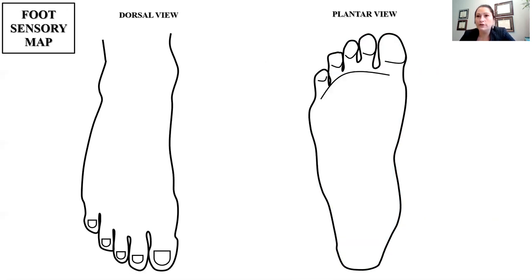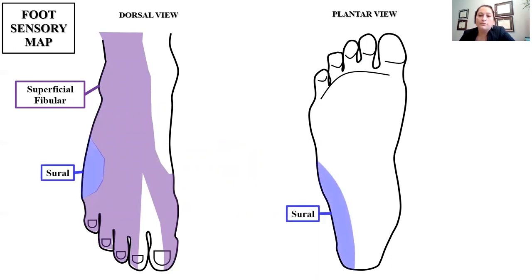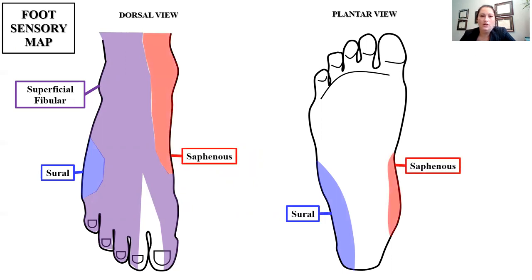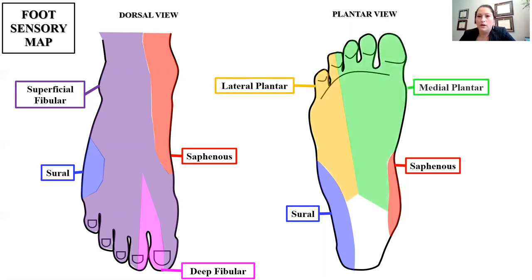Finally, the foot sensory map — cutaneous nerves, sensory only, not motor. On the dorsal side, the superficial fibular nerve covers most of the skin on the top of the foot. The sural nerve wraps around the foot, giving some sensation on the top and some on the bottom — a sural sandwich. The saphenous nerve covers the medial side, the big toe side of the dorsal foot. The deep fibular nerve, coming up from the bottom of the foot between the first and second metatarsals, provides sensation in that area — wearing sandals with a thong strap can cause paresthesias over this nerve. On the plantar side, we have the lateral plantar nerve, medial plantar nerve, and the calcaneal branch of the tibial nerve.